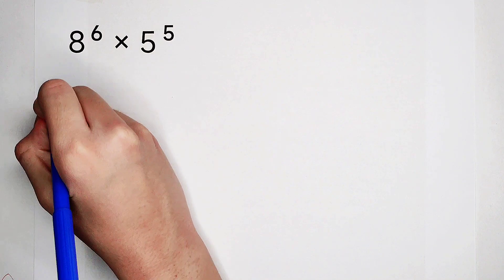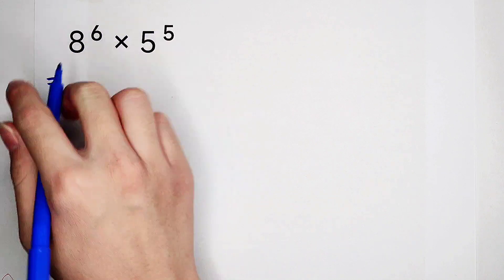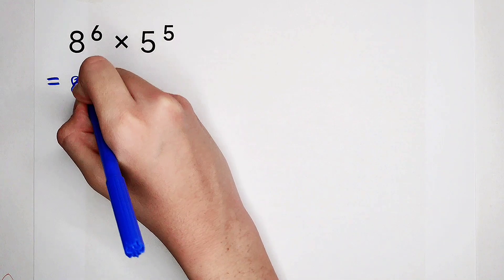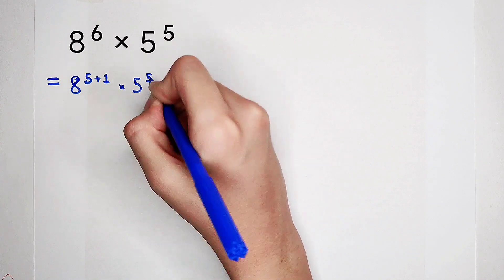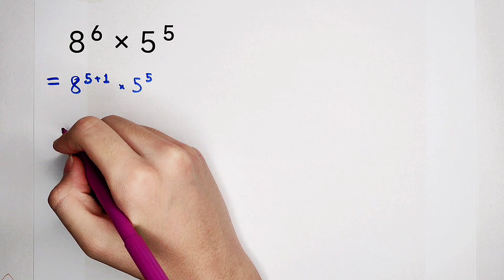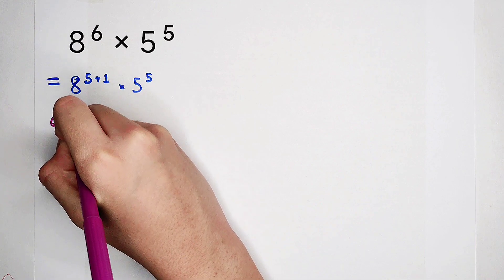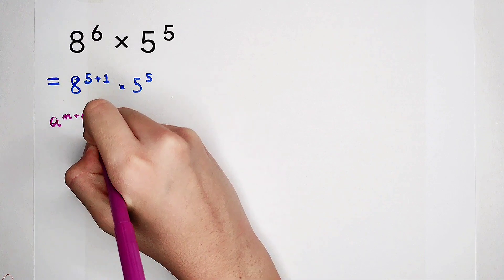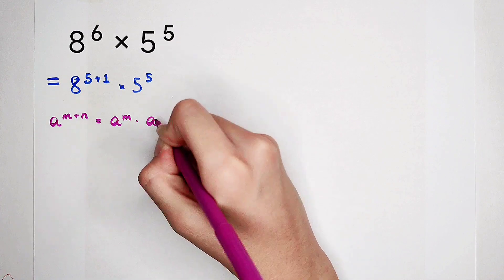So our first step should be to replace the 6 with 5 plus 1. So we have 8 to the power of 5 plus 1, then times 5 to the power of 5. And now we should use this formula. The formula for calculating exponents: a to the power of m plus n is equal to a to the power of m, times a to the power of n.